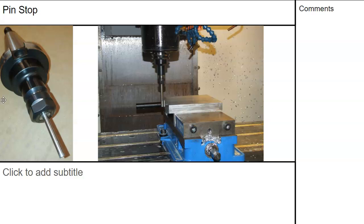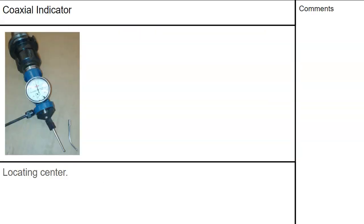A pin stop or floating pin stop comes into position; you program it to go to a known location, bank the material up against it, close the vise, the pin moves away, it goes and does a tool change, and then you can machine both sides of the part. Then there's the coaxial indicator, which sweeps the inside of a bore or the external portion of a pin. As you move X and Y, the needle moves back and forth, and when the needle becomes stationary you are right over the top of the part.